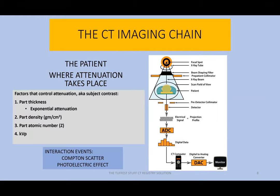The patient is where attenuation takes place. The factors that control attenuation, otherwise known as subject contrast, include four things. They are part thickness — otherwise known in the literature as exponential attenuation — and any amount of part thickness will cause attenuation to occur, no matter how thin or how thick. The second factor is part density, measured in grams per centimeter cubed.